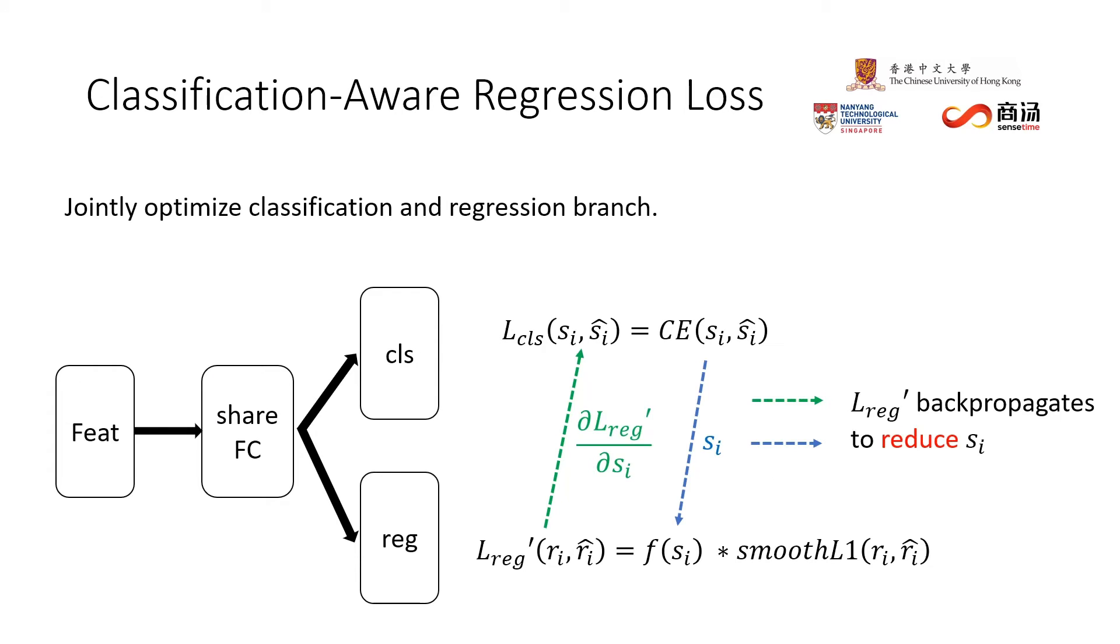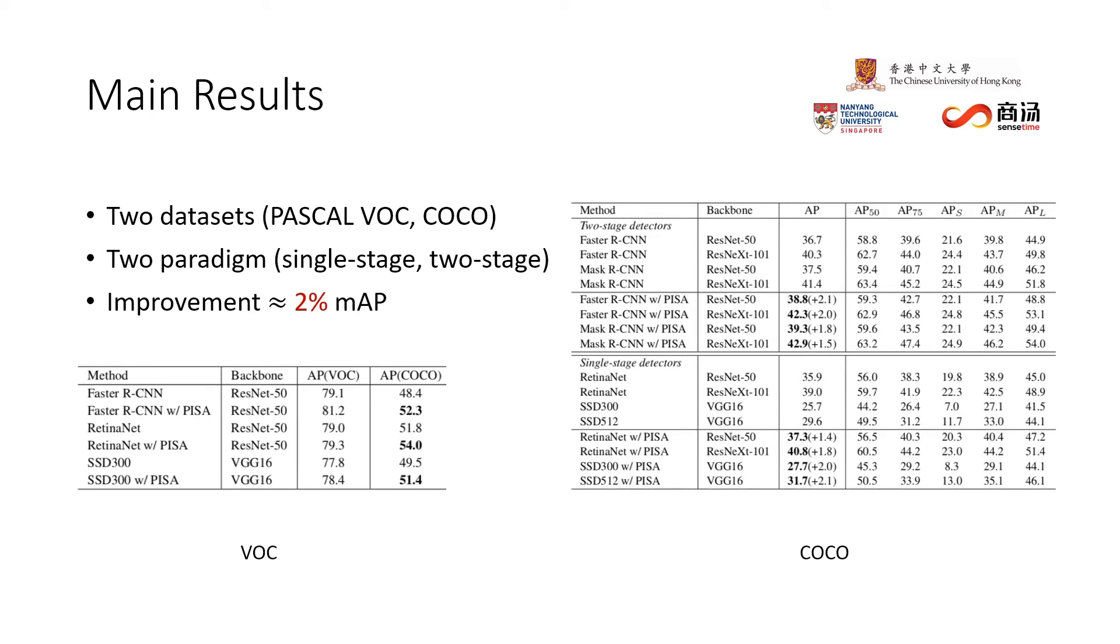We further propose a new loss named CAR, which jointly optimizes the classification and regression branch. We apply our methods to various models and obtain consistent improvement of up to two points.